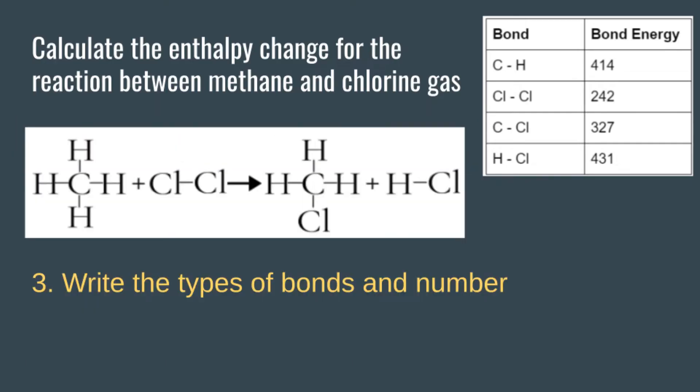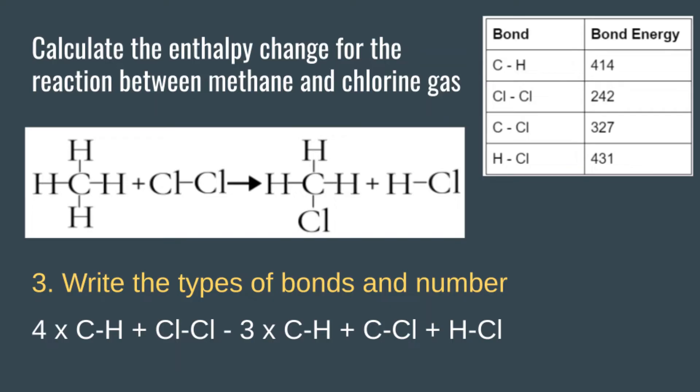Under this structure we want to write the types of bonds and how many of each bond there are. For this reaction we have 4 C-H bonds in the methane and 1 Cl-Cl bond. In our products we have 3 C-H bonds, 1 C-Cl bond, and 1 H-Cl bond.